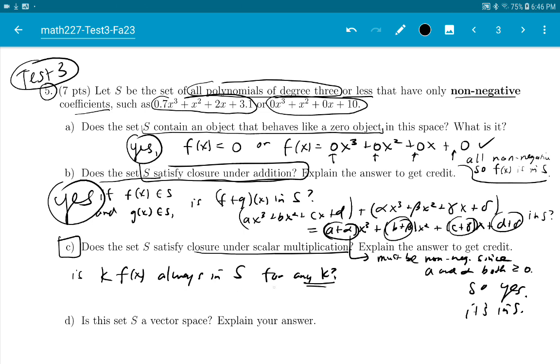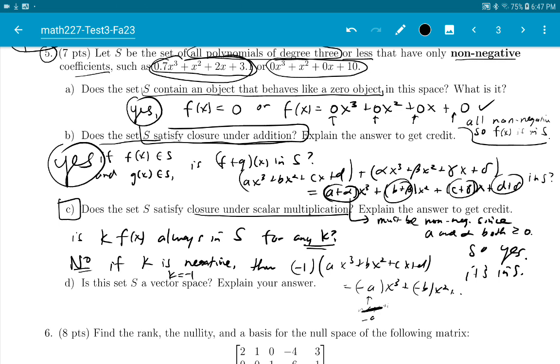Here's the trick. For any k? Well, no. If k is negative, like negative one or negative two, then for example, k equals negative one times a function like this, ax³ + bx² + cx + d, would equal -ax³ + -bx² and so on. And this is negative since a is not negative. Since a is positive, negative a is negative.